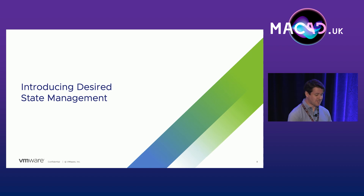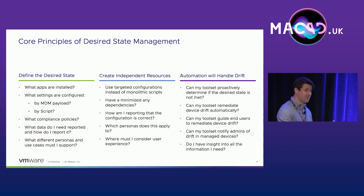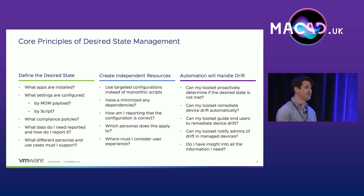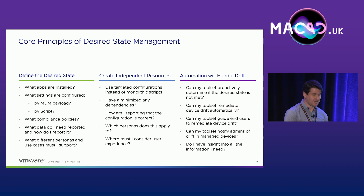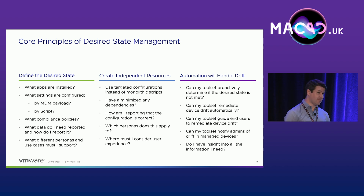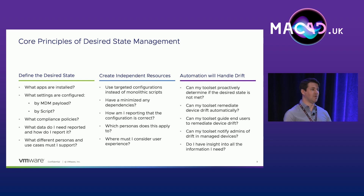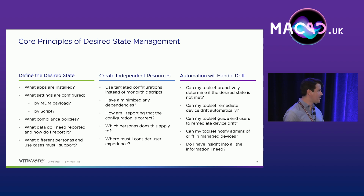Let's talk about desired state management and the principles that can help address these challenges — there are really three main pillars. The first is proactively and fully defining what that desired state is: what are all the apps that need to be installed, what settings need to be configured, what are your compliance policies and security requirements? Must all devices be encrypted? Are you using multi-factor auth? Do you have to adopt new macOS versions within a certain period? Are there certain vulnerabilities your team is monitoring for?